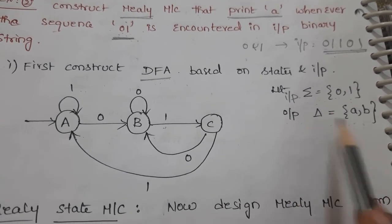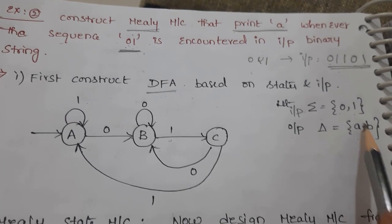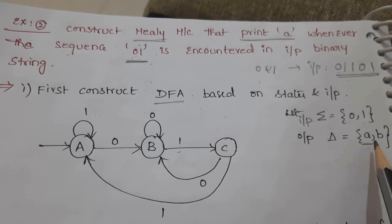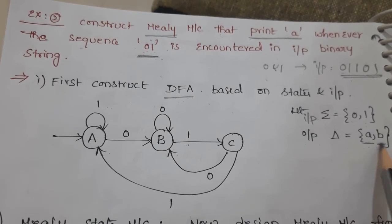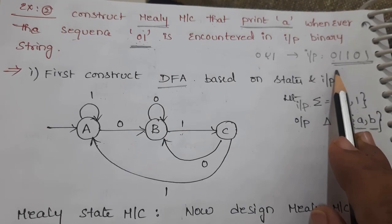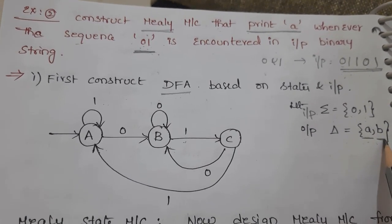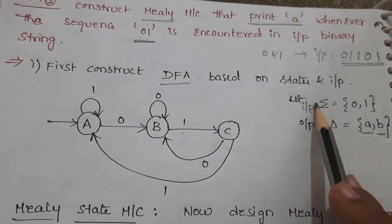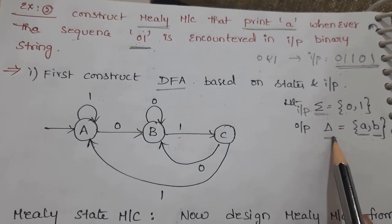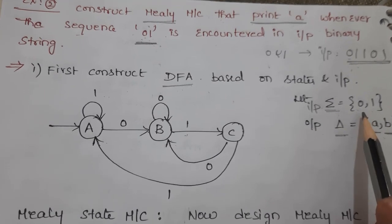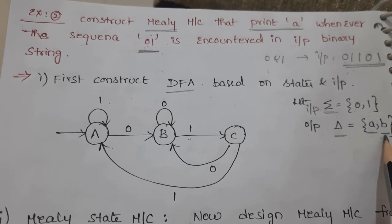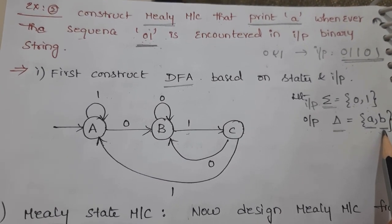The output will be either A or B. If the 01 sequence is obtained, we print A; otherwise we print B. So sigma represents the input set {0, 1} and delta represents the output set {A, B}. Based on this, I am going to construct our deterministic finite automata.